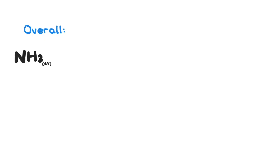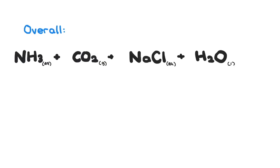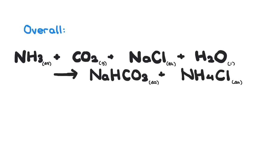In the Solvay process, ammonia and carbon dioxide gases are dissolved in brine solution to produce a solution of sodium hydrogen carbonate and ammonium chloride. The sodium hydrogen carbonate crystallizes from this solution and is decomposed by heating to produce the product sodium carbonate.